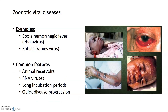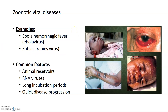The last viral disease type we'll discuss is zoonotic viral diseases. 'Zoonotic' simply means they come from animals, so a common feature of these diseases is that their reservoirs — the natural environment for these viruses — are within animals. Almost all zoonotic viral diseases are caused by RNA viruses. They tend to have very long incubation periods, meaning a long time between exposure and developing symptoms, but once symptoms develop, disease progression is relatively quick. Examples include hemorrhagic fevers caused by viruses like Ebola, as well as rabies. Ebola in particular has a very quick disease progression once symptoms begin to manifest.